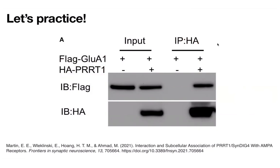They're using a Western blot both against the flag tag — which tells them if GluA1 is there — and against the HA, which tells them if PRRT1 is there. In one sample they have flag-GluA1 but not HA-PRRT1, and in the other they have both. You should see the same conditions reflected in both the input and the IP table. In the first sample there's no HA, so we shouldn't expect to see any in our IP — and in fact we don't. That's essentially a negative control.